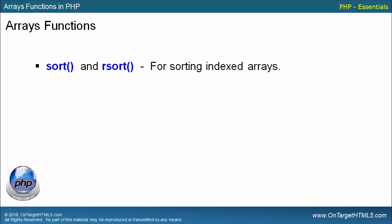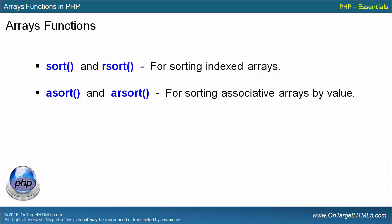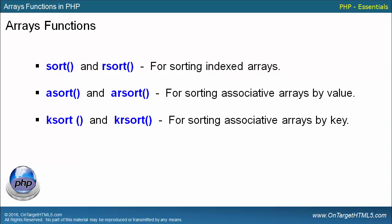We're going to work with sort and rsort — these are for sorting indexed arrays. We're going to look at asort and arsort for sorting associative arrays by value, and ksort and krsort for sorting associative arrays by key. The only difference between the pairs is that one is for ascending order and the other is for reverse or descending order — that's why you see the 'r' in the function name.